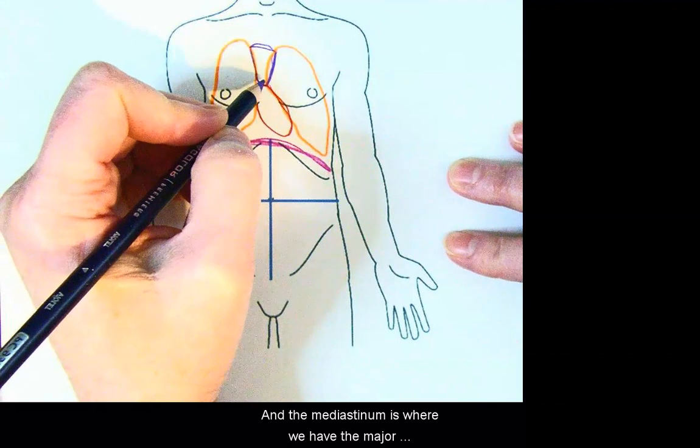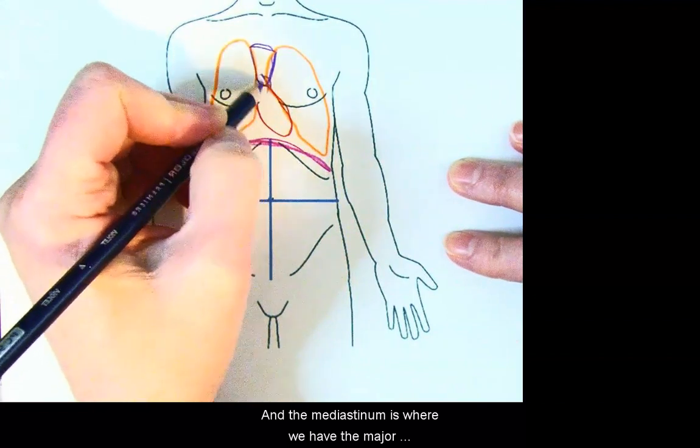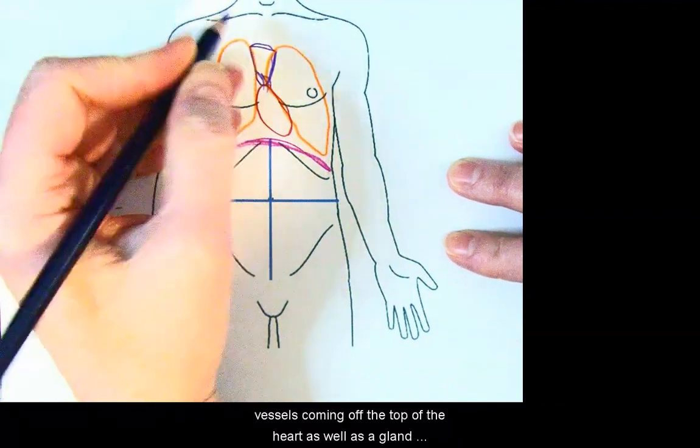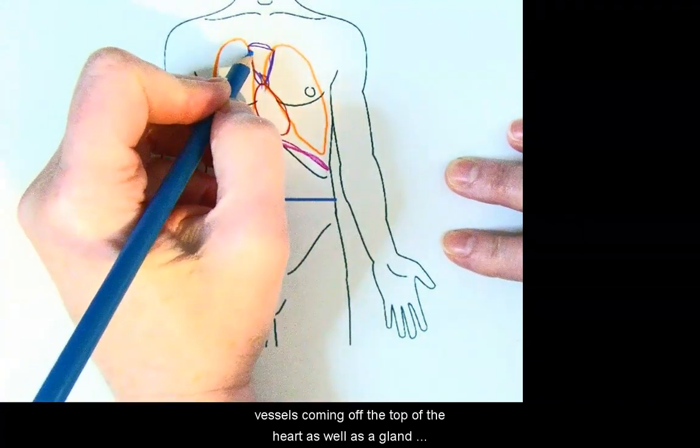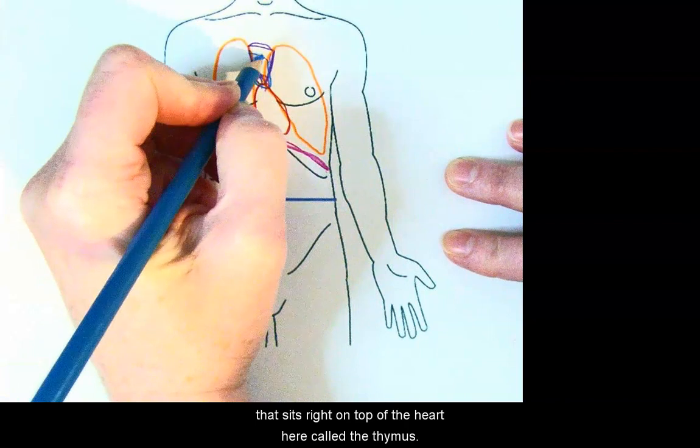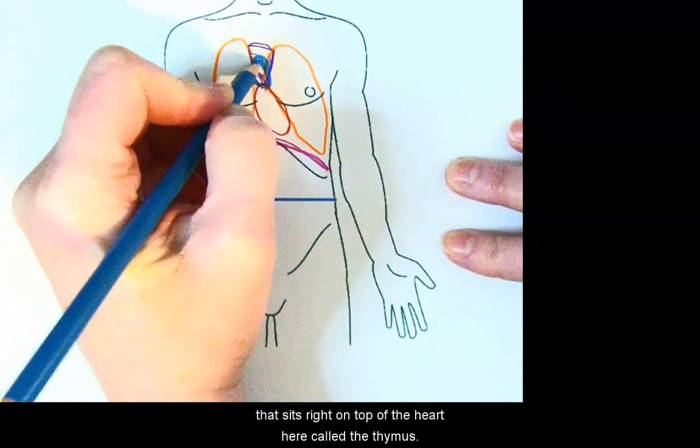And the mediastinum is where we have the major vessels coming off the top of the heart as well as a gland that sits right on top of the heart here called the thymus.